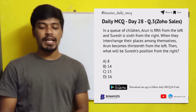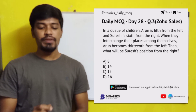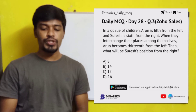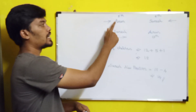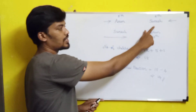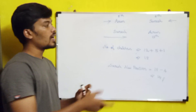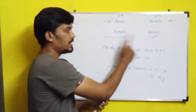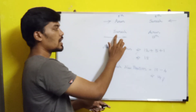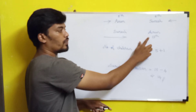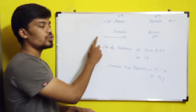The last question: in a queue of children, Arun is fifth from the left and Suresh is sixth from the right. When they interchange their places, Arun becomes 13th from the left. What will be Suresh's position from the right? When they interchange, Suresh comes to Arun's original position and Arun comes to Suresh's original position, so Arun is now 13th from the left. We don't know the total number of children in the queue yet.